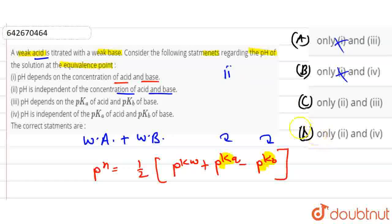Third statement: pH depends on the PKA of the acid and PKB of the base. This is correct. Fourth statement says pH is independent of the PKA of acid and PKB of base - this is wrong. So second and third statements are correct.